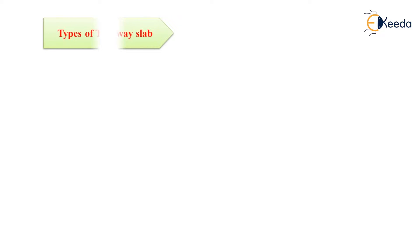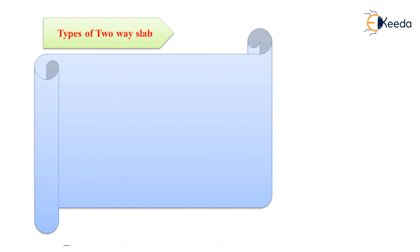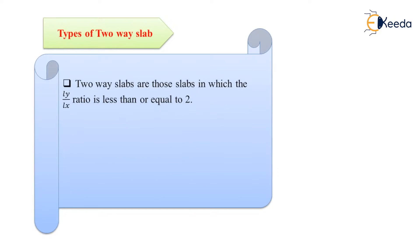First of all, we will see types of two-way slab. The two-way slabs are those in which the ratio of longer span to the shorter span is less than or equal to 2. That means the ratio of Ly by Lx is less than or equal to 2, and then we call the slab a two-way slab.